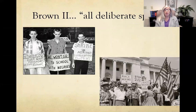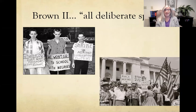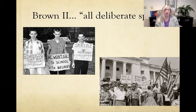Brown 2, issued in 1955, created a timeline for when integration had to happen, stating it must occur with 'all deliberate speed' — meaning as quickly as possible. But there was no specific deadline — no requirement that by the start of the 1957 school year all schools had to be integrated. Of course, schools said they were going as fast as they could while making no real effort. You could see protests playing out in school districts across the United States.